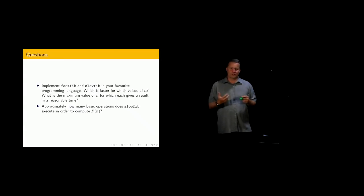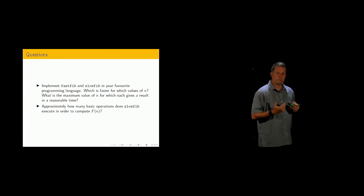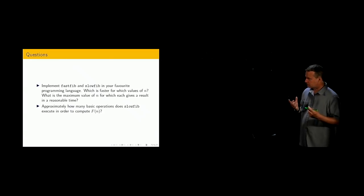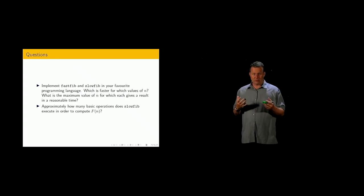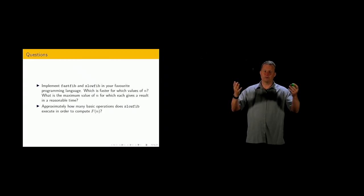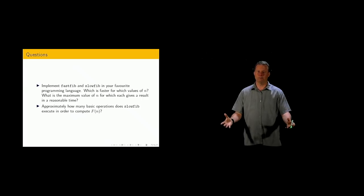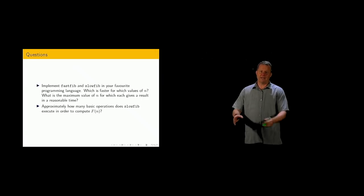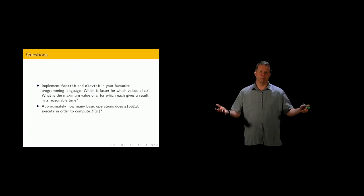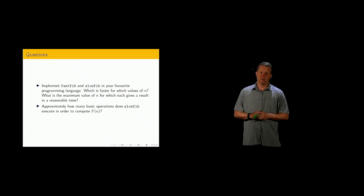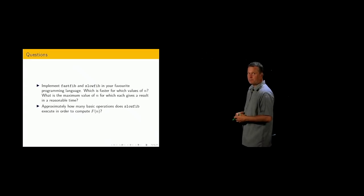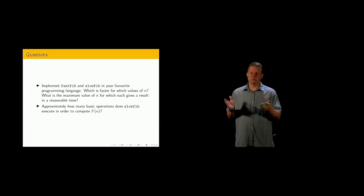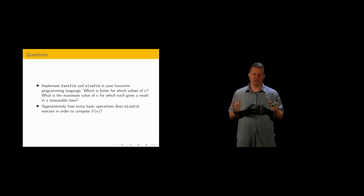The next one is to think about the slow algorithm. Remember the tree that I drew? Think about that for a general value of n. Try and work out how much work is going to be done by the algorithm. In the end, it's just doing a whole lot of function calls until it gets right to the bottom. And then it has these values 0 and 1, and it adds them all up repeatedly. But how many of them are there? Turns out it's a pretty big number. So think hard about these problems. Do the implementation. And I'll see you at the next lecture, if not before.